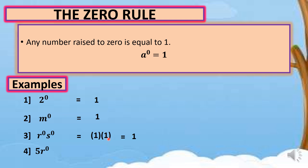Example number four: you have 5 times R raised to zero. Take note that the zero exponent applies to variable R only — five is not included. So we copy five, then simplify R raised to zero as one. Multiply five times one, and our answer is five.